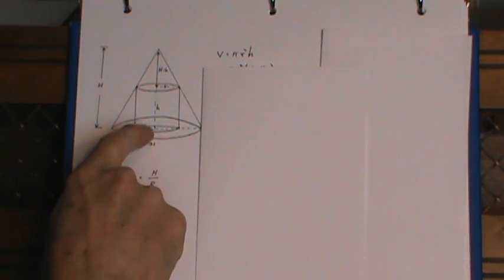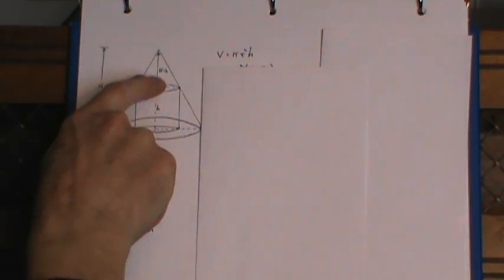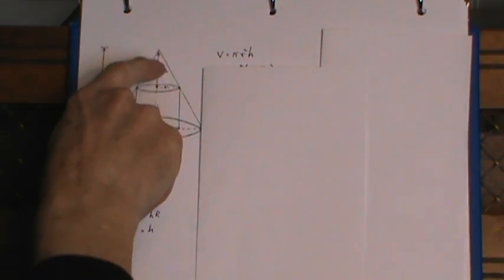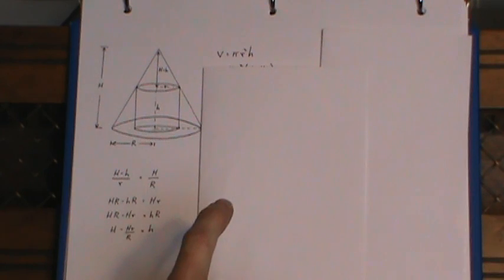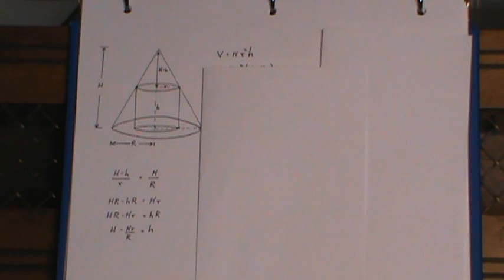If I subtract the small h from the capital H, I get this distance up here. I'm looking at the volume of the cylinder, which is pi r squared h, and I have to get a relationship between r and h because I need to get this in terms of one variable.